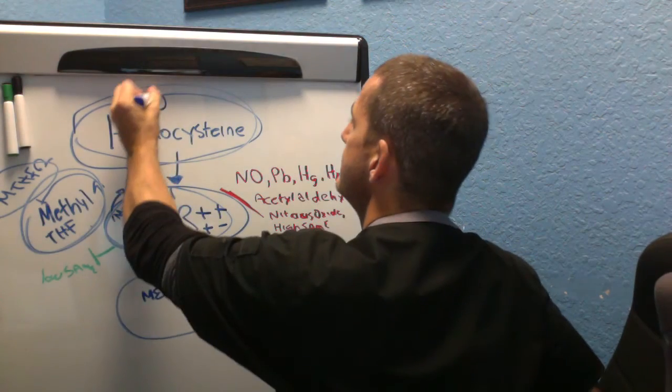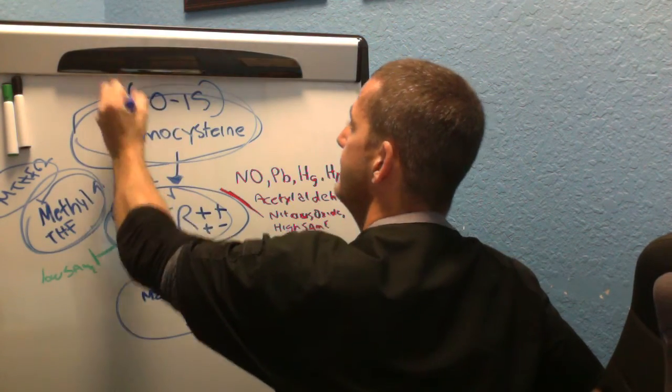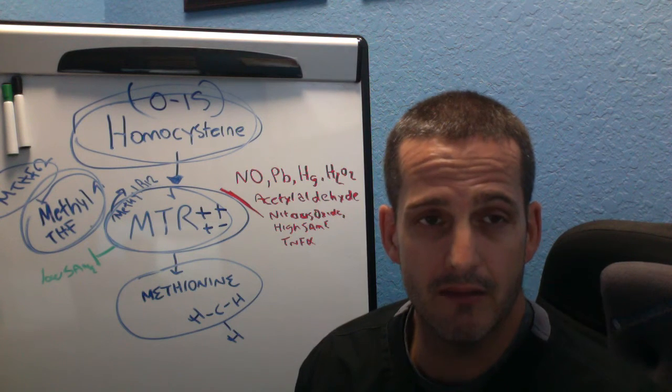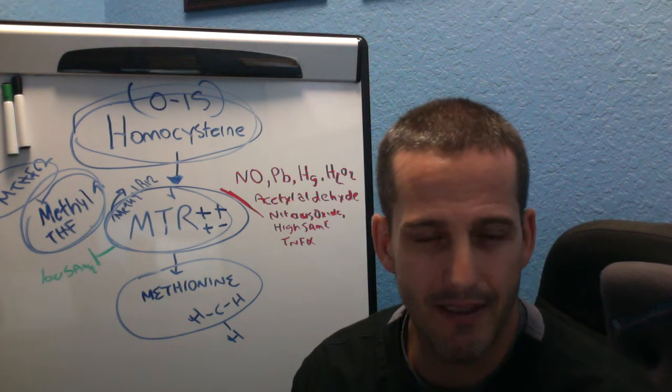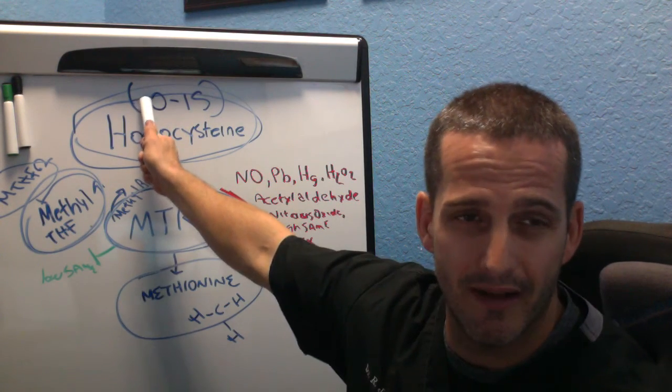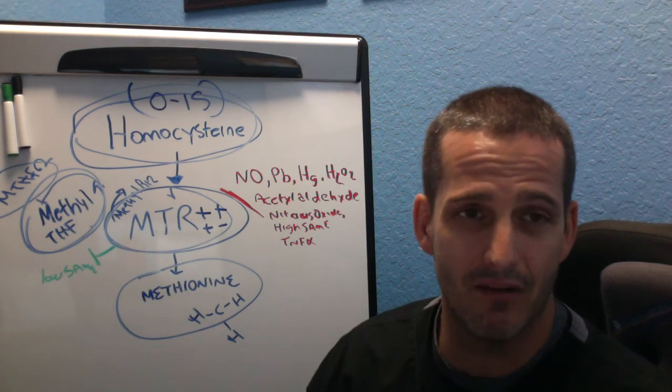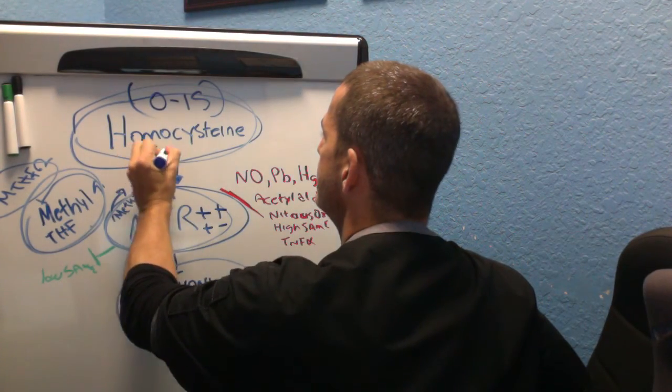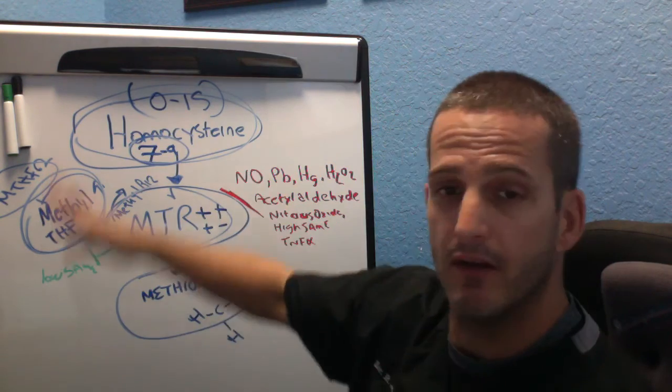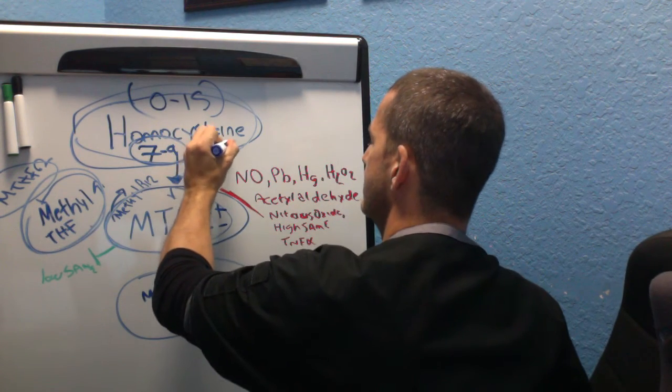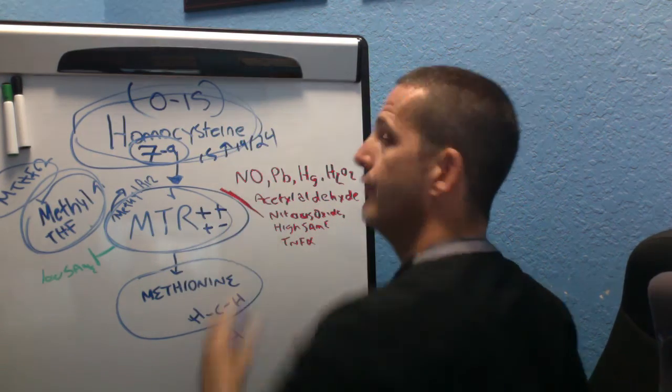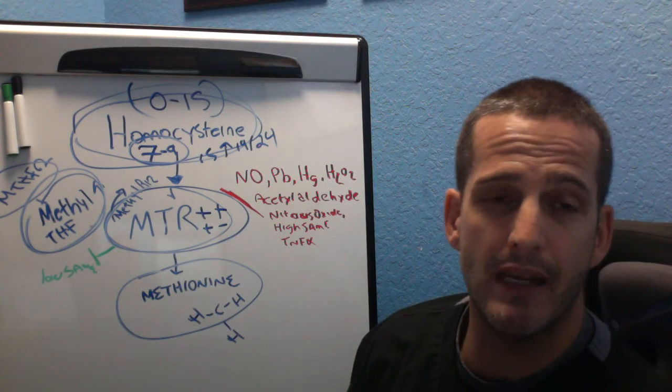A lot of the times, homocysteine's ranges you'll see on a blood test is 0 to 15, which is ridiculous. That means that if I have 1 and you have 14, we're both the same. Or in order for me to be flagged on the low end, it has to be less than 0. It has to be minus 1. An optimal range is 7 to 9. So we can tell if this whole cycle is blocked, then typically homocysteine is going to start to rise. And I've seen people have 19, 24. And I know that they have some major blockages.